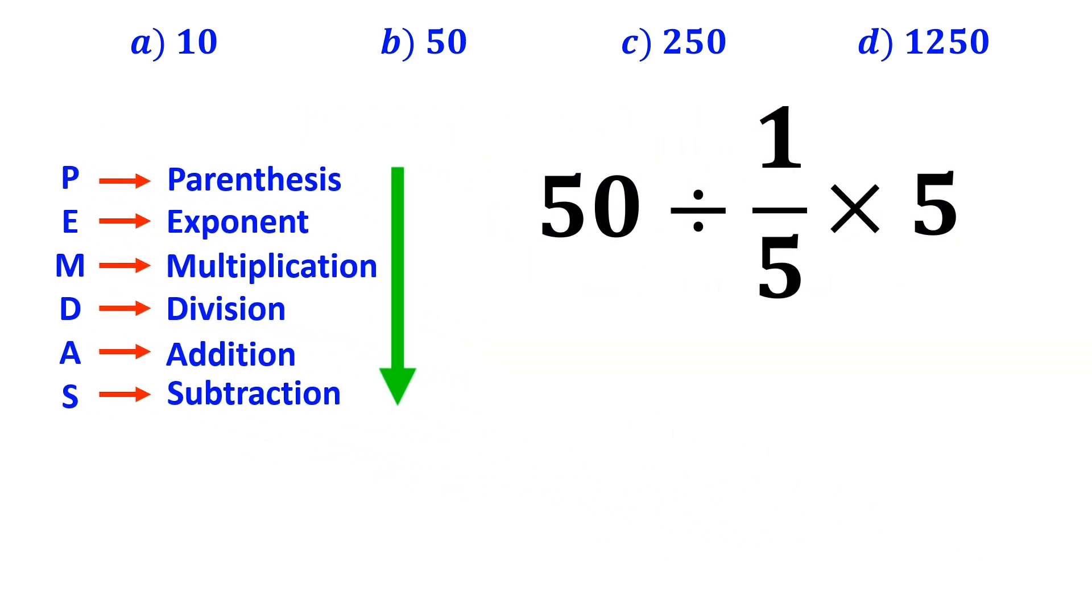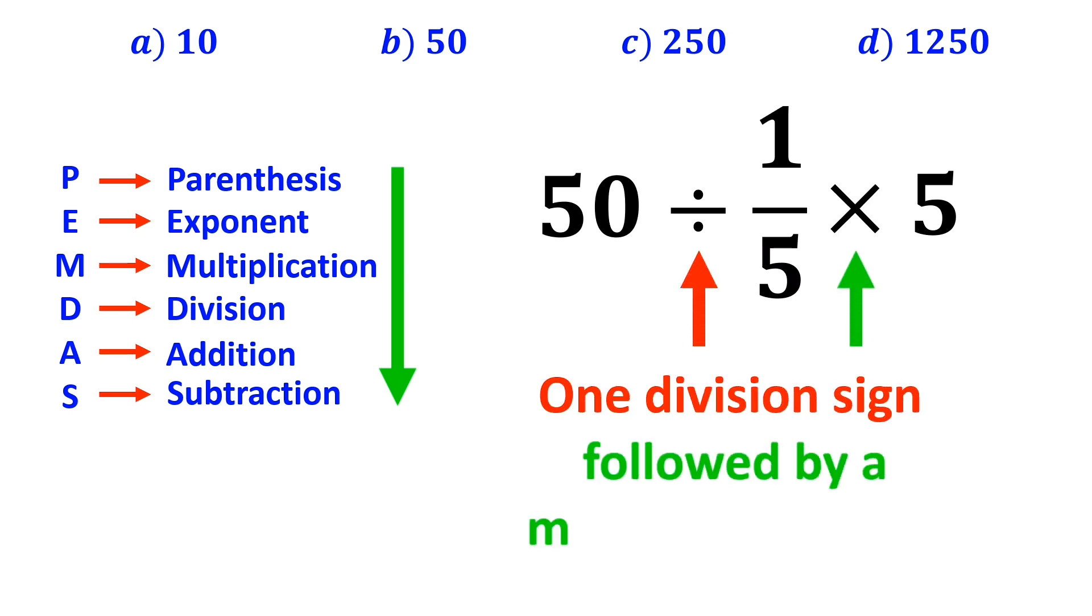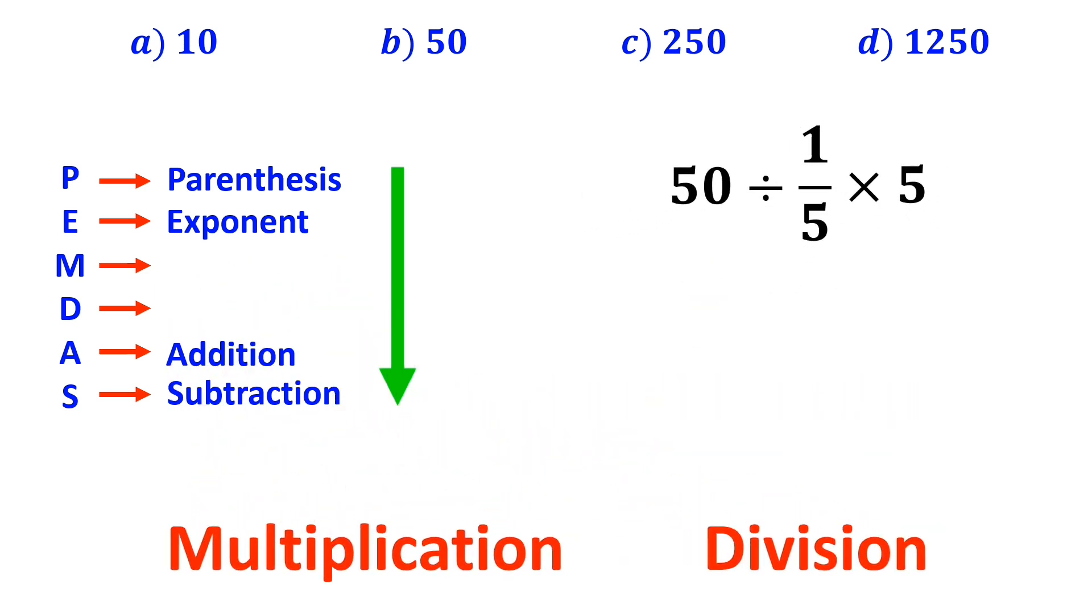As you can see on the screen, in this expression we have one division sign followed by a multiplication sign. It's very important to note that multiplication and division are at the same level of precedence.